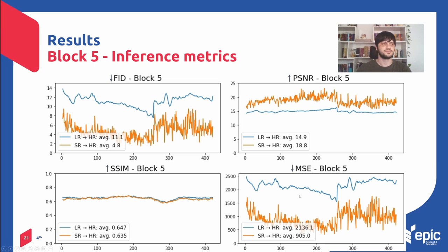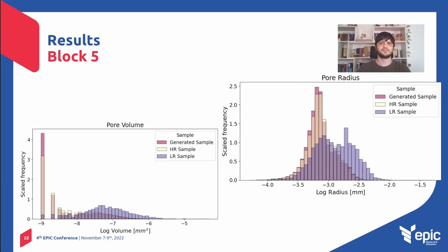Here we have the metric plots for block five. They also behave similarly to block four, but the differences were more pronounced — specifically in the mean square error and other metrics, but not in the structural similarity. In general, the model could predict better, which was expected considering the training was made using a sample with similar geological content, since both block five and block six were shrubs. For the pore network modeling, the model did better in this case — there was not a big miss, and in general it was a little bit better.